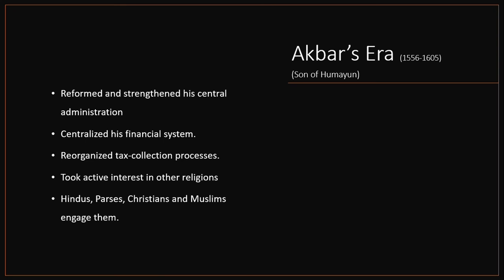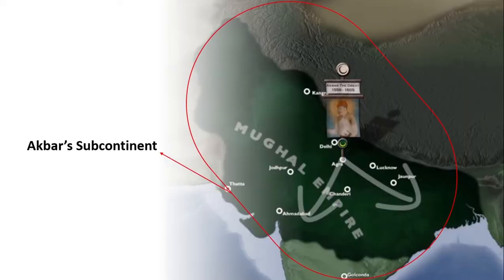From 1556 through 1605, Akbar promoted a variety of major changes within the Empire and extended the Mughal Empire over most of the Indian subcontinent. He reformed and strengthened his central administration, centralized his financial system and reorganized tax collection processes. He took an active interest in other religions, persuading Hindus, Parsis and Christians as well as Muslims to engage in religious discussion before him. This is the map of Akbar's subcontinent. After the death of Akbar, Jahangir and then Shah Jahan took control of the Mughal Empire, and this chain went on.